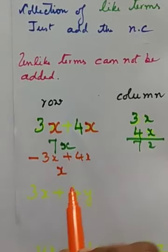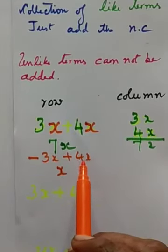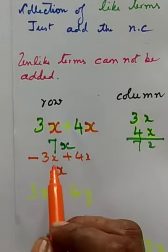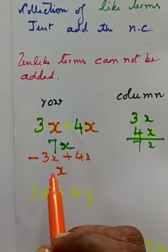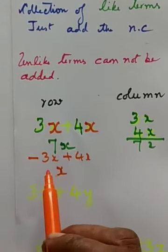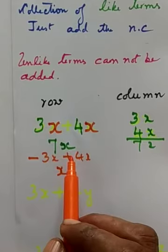Write the algebraic coefficient, that is x. 4 minus 3, that is 1. 1 you need not write. And put the sign of bigger number. You need not put plus sign.